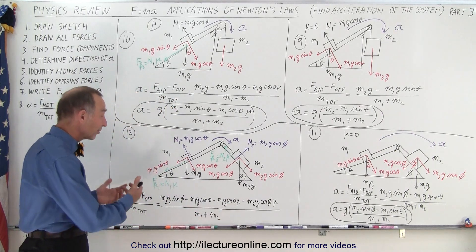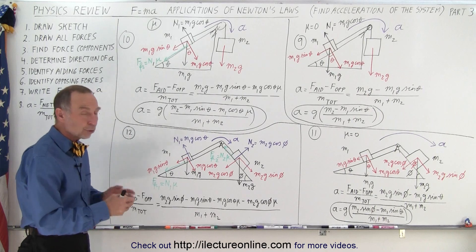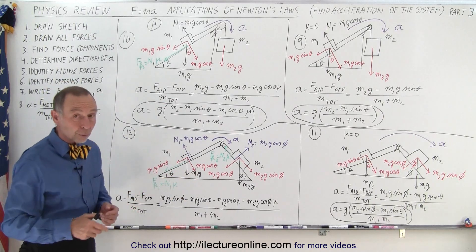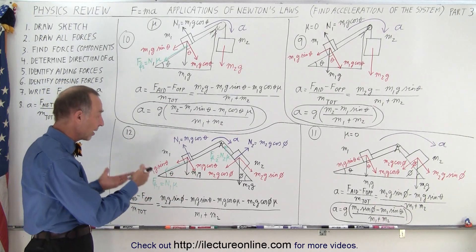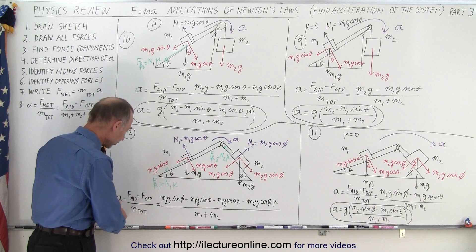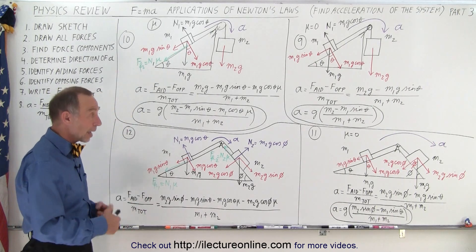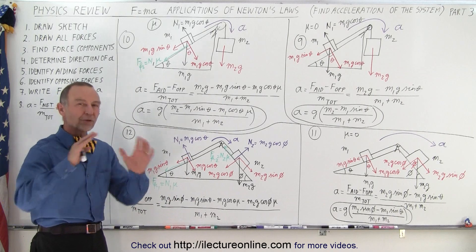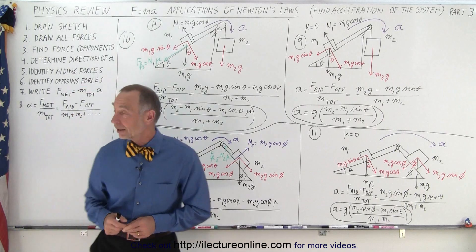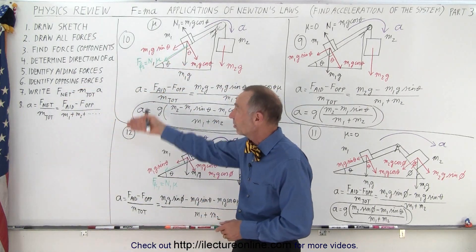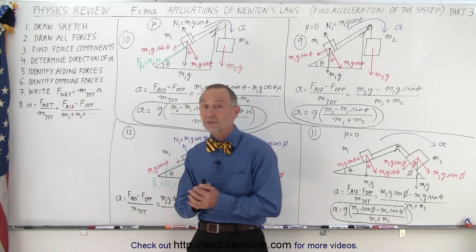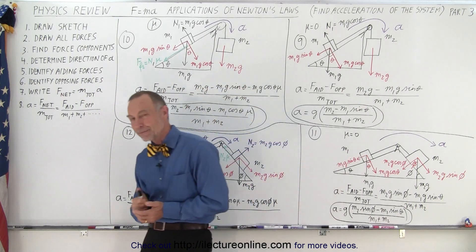It's the same approach regardless of what the problem looks like. These four examples, along with the ones seen before, are all worked the same way — the net force is the difference between the aiding force and the opposing force, divided by the total mass to get acceleration. To calculate the tension on the string, summary videos will follow these examples. Remember this is the methodology for F equals MA problems for the entire system.